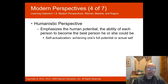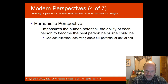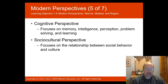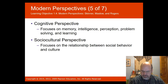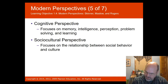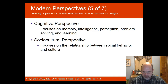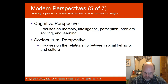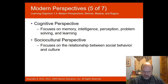The humanistic perspective emphasizes human potential — the ability of each person to become the best person they can be. If we create the right, caring environment, we can help people become self-actualized. The cognitive perspective focuses on memory, intelligence, perception, problem-solving, and learning, and has become a major force in psychology, especially with the development of computers that replicate models of human thinking. The social-cultural perspective focuses on the relationship between social behavior and culture — including social psychology, the study of groups, social roles, and rules of social actions, and cultural psychology, the study of cultural norms, values, and expectations.